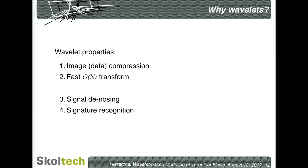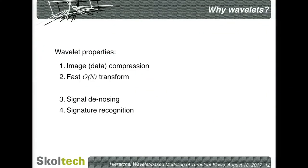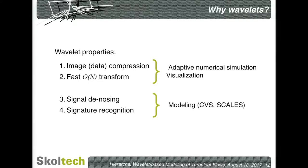The question is why we want to use wavelets for adaptation. Wavelets have four particular properties: they are good at image compression, their algorithms are very fast, they are good at denoising signals, and they are very good at feature recognition. We use the first two features to construct numerical methods, and the second two for modeling. Combined together, they provide a nice uniform hierarchical framework for wavelet-based turbulence modeling.